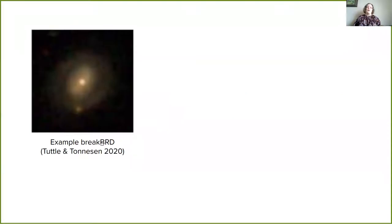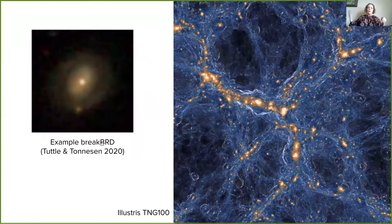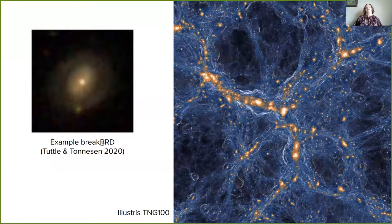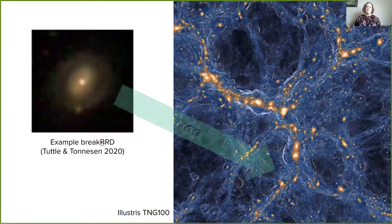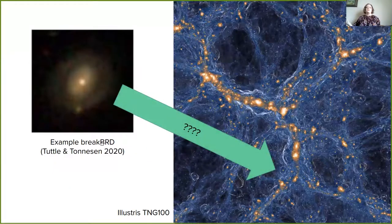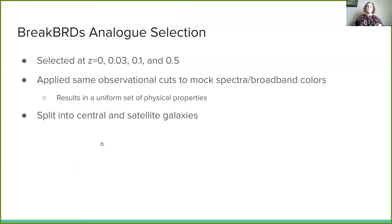On the one hand we have the observed population of Breakthrough Galaxies, but of course the other great tool in astronomy is simulations and theory. With IllustrisTNG we wondered: can we find galaxies in the simulation that are analogues to the observed Breakthroughs? We looked at a couple of different redshifts, mostly low redshifts, and we applied the same observational cuts that were used for the observed Breakthroughs, applying those to mock spectra and broadband colors to select our analog Breakthroughs.